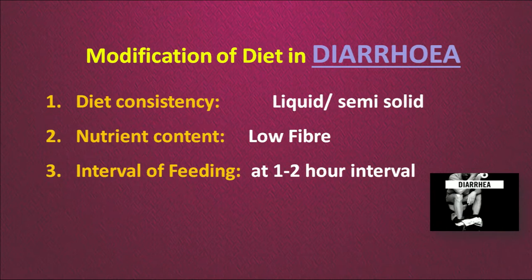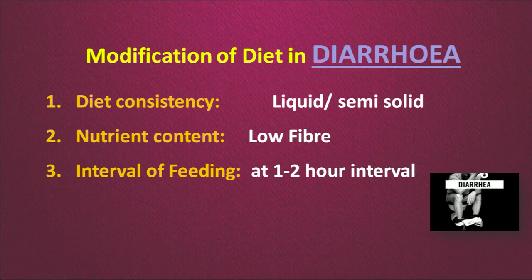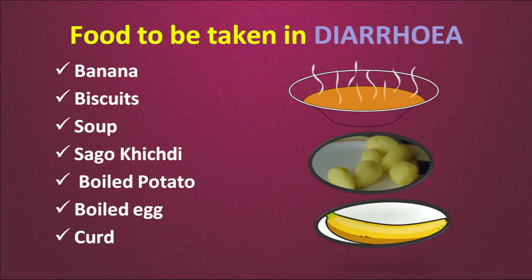With the passage of recovery we can move to a semi-solid diet. We need to give a very low fiber or no fiber diet, and lots of liquids including ORS. Initially we will give liquid diet at one to two hour intervals to help recover the loss of fluids from the body. Foods that can be given in case of diarrhea: banana, biscuits, soups (not very hot), sago khichdi or simple khichdi, boiled potato, boiled egg, or curd.